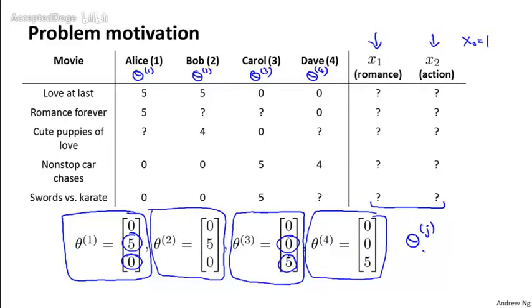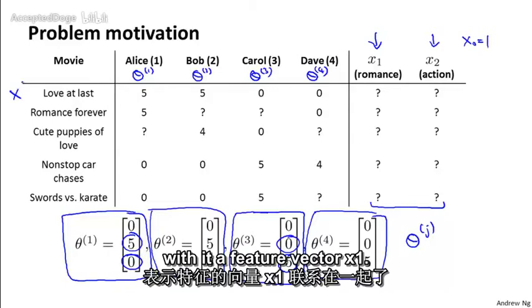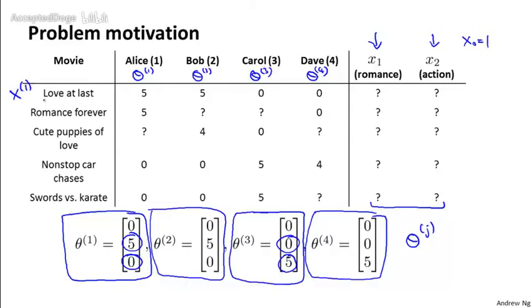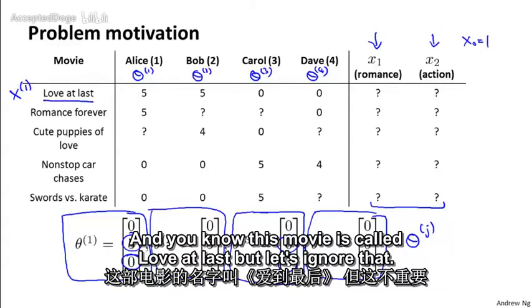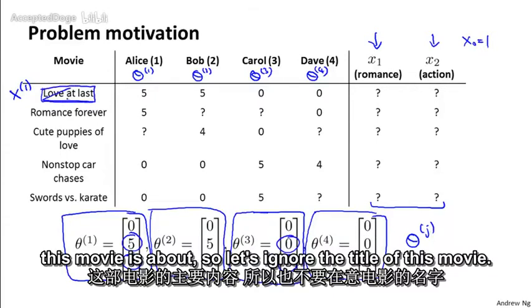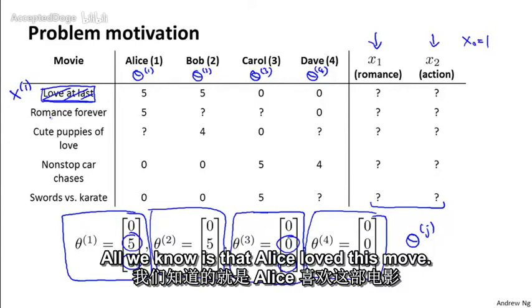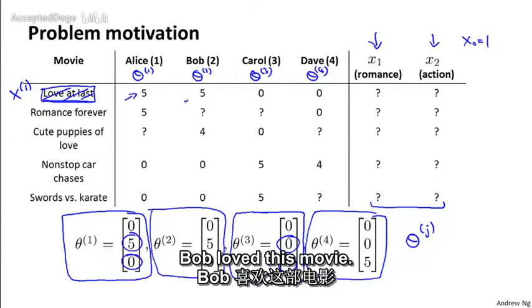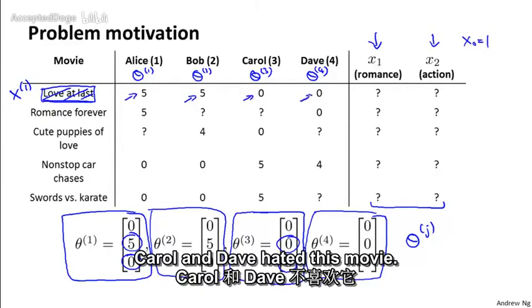Let's look at an example. Let's look at movie one. So that movie one has associated with it a feature vector x1. And this movie is called Love at Last, but let's ignore that. So let's pretend we don't know what this movie is called. So let's ignore the title of this movie. All we know is that Alice loved this movie. Bob loved this movie. Carol and Dave hated this movie.